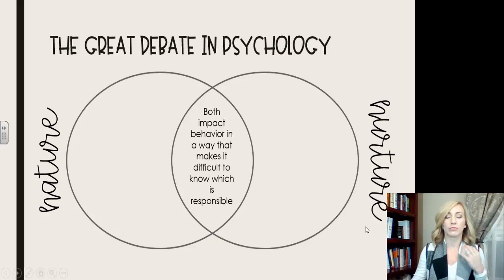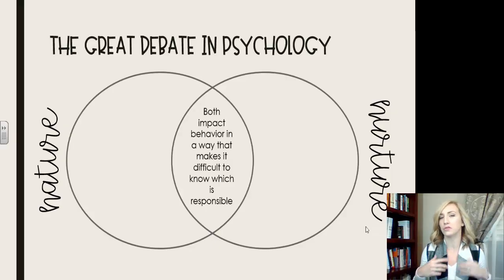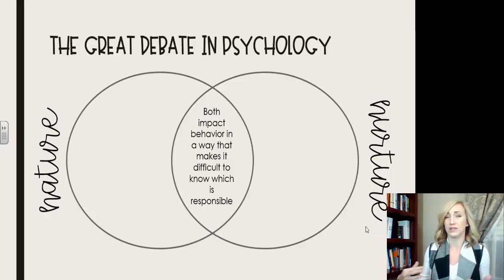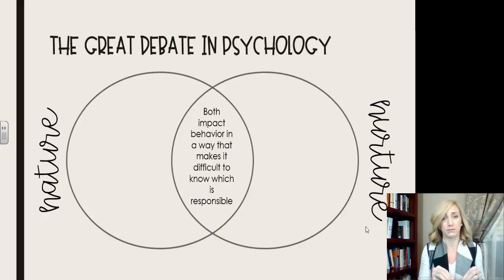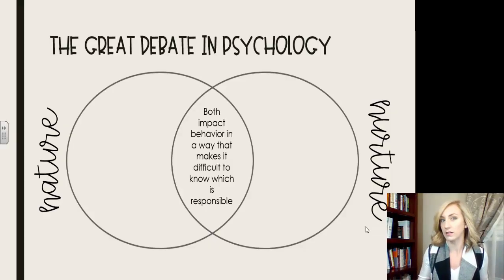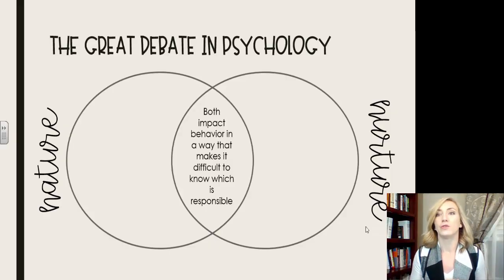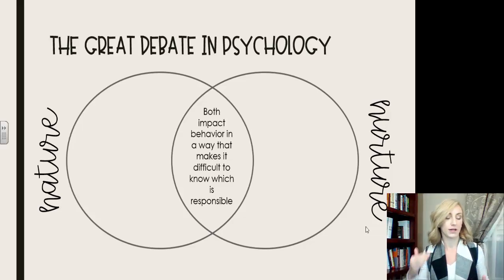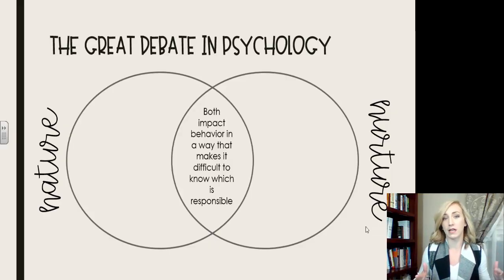Let's briefly talk about what these are. First, what they have in common is that both impact behavior in a way that makes it difficult to know which one is responsible for any particular behavior. A more obvious one is having brown eyes because your mom gave you the dominant gene, but what about your attentiveness, personality traits, type A or type B personality, religious beliefs, and work ethic? Where do those come from?